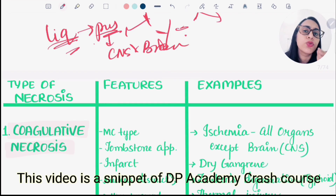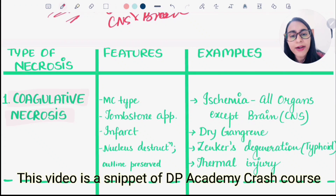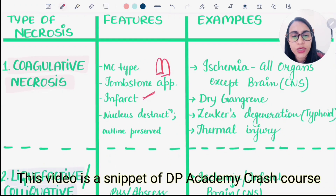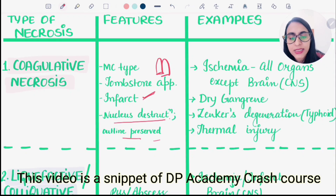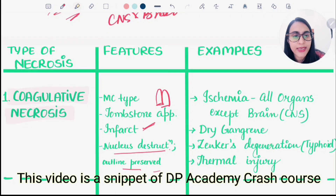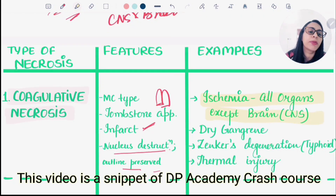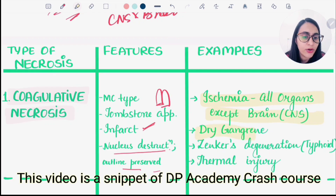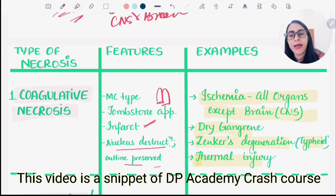Coagulative necrosis is a dry necrosis and is the most common type. We see tombstone appearance; the nucleus is destructed but the outline is still preserved, and we see karyorrhexis. Examples include ischemia in all organs except brain and CNS, dry gangrene, and Zenker's degeneration, which is muscle necrosis seen in typhoid or thermal injury.